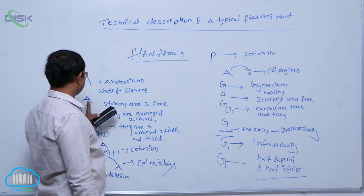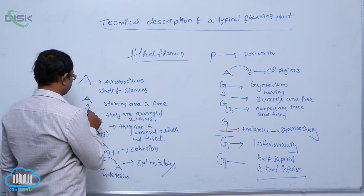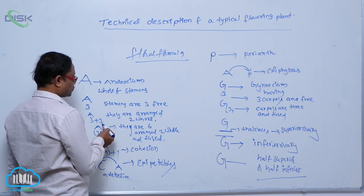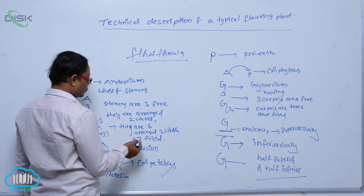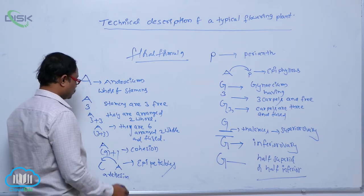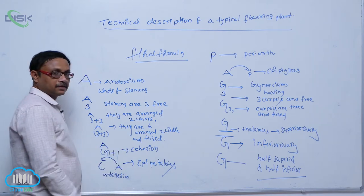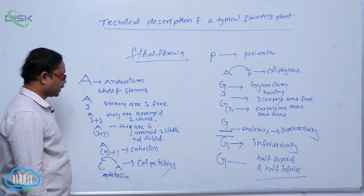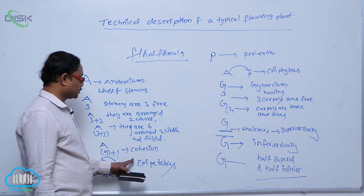In the floral formula, A means androecium or stamens. If A3 without bracket, three stamens are in a free condition. A three plus three means stamens are arranged into two whorls but are free. With bracket, nine plus one means the filaments are fused to form a bundle. If stamens are attached to the corolla, that is the indication of an epipetalous condition.